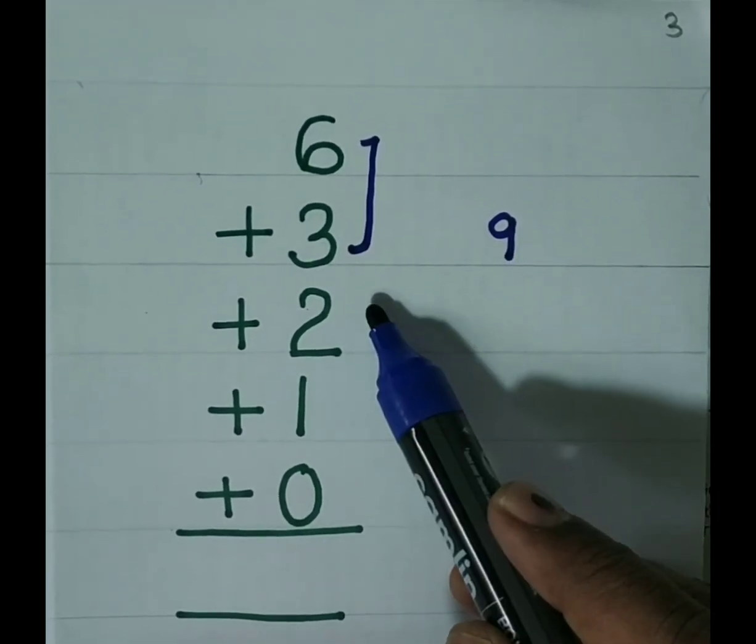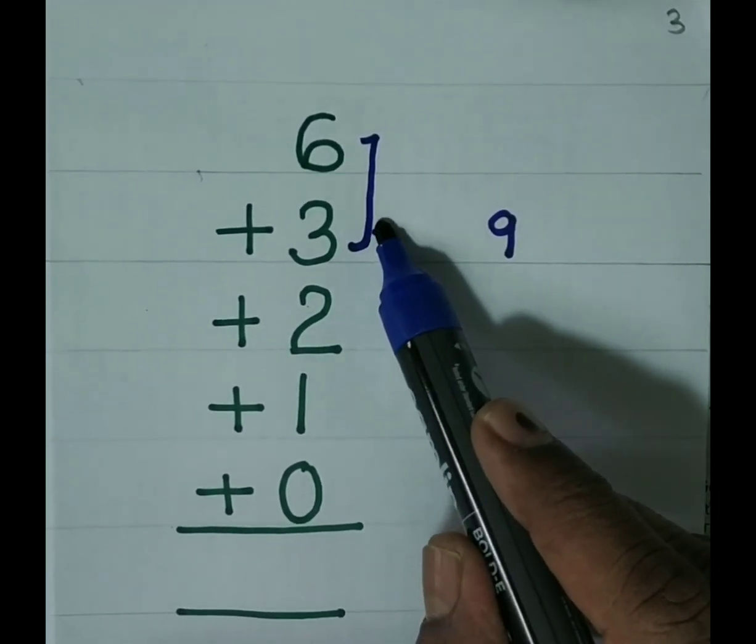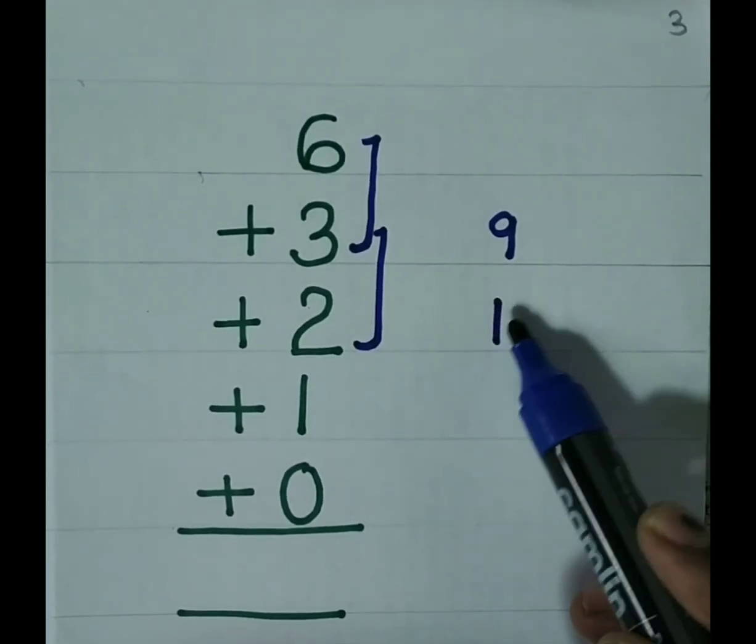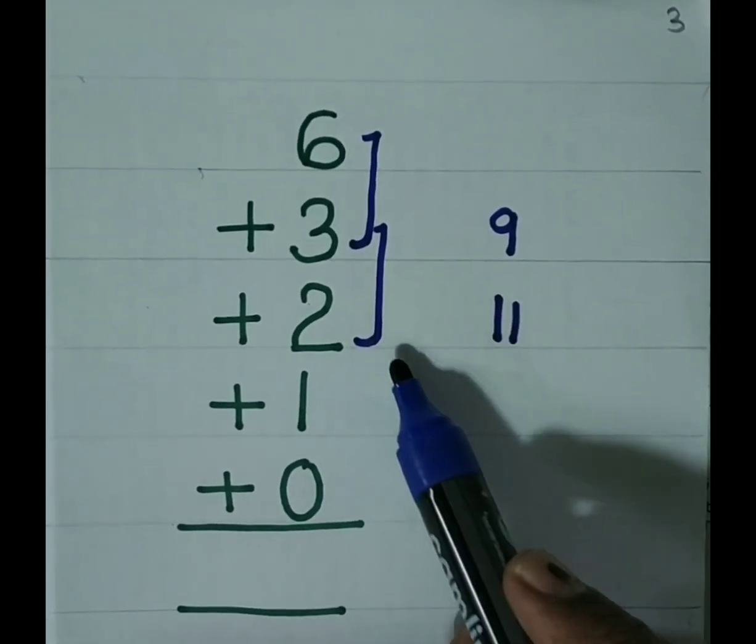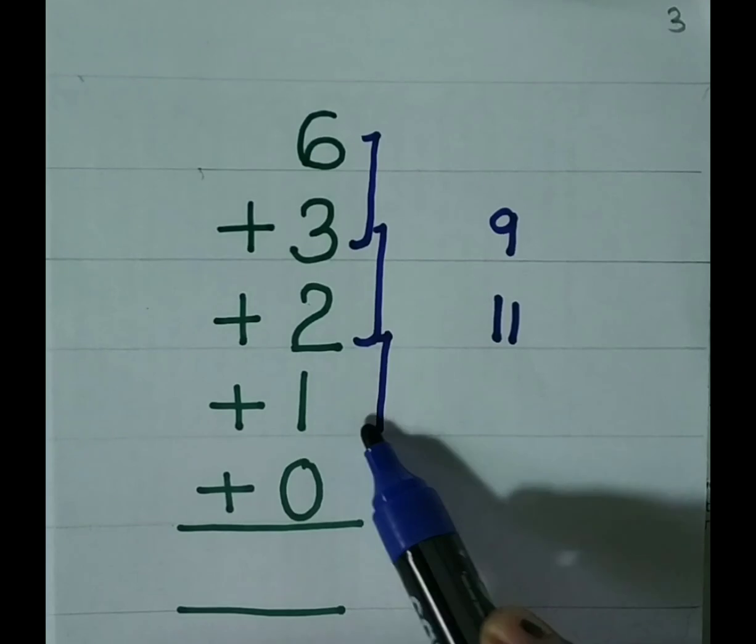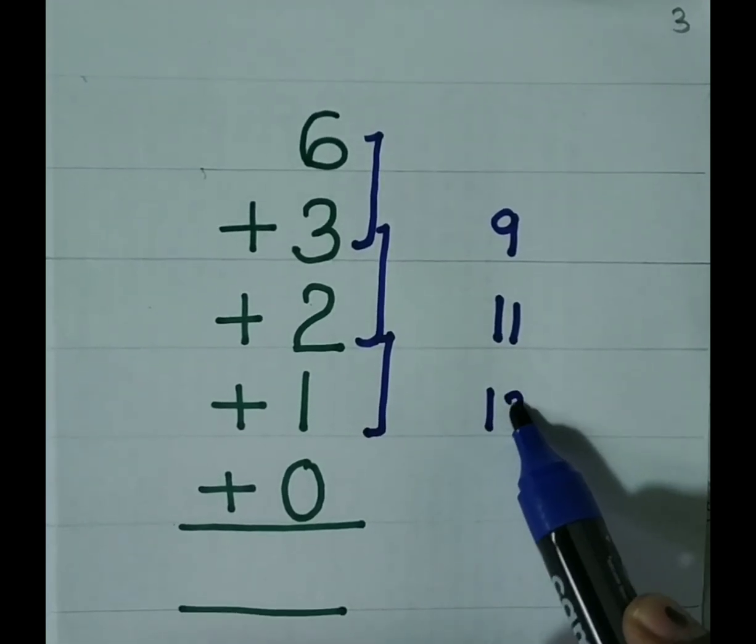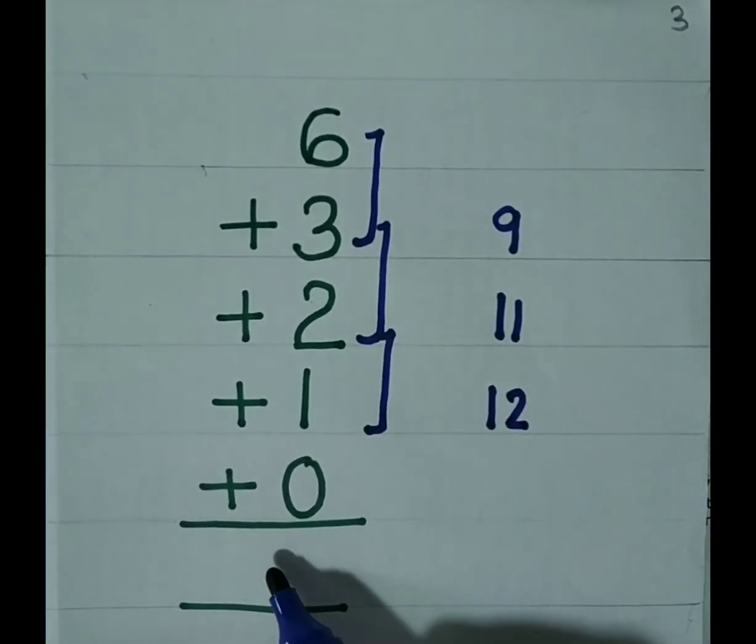9 plus 2. 9 plus 2 is 11. 11 keep in mind. 11 plus 1 is 12. 12 plus 0 is 12.